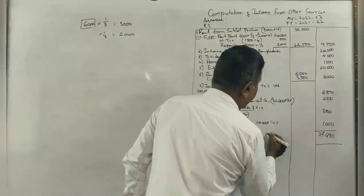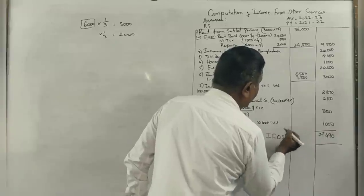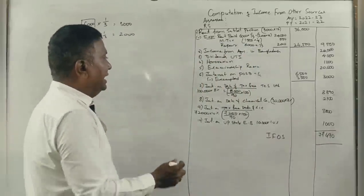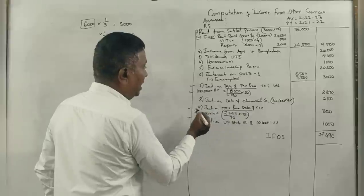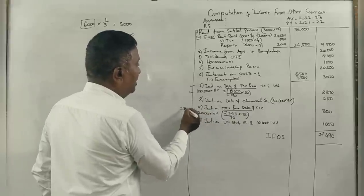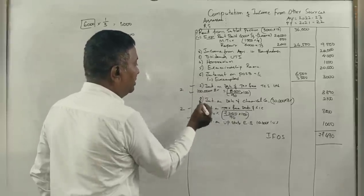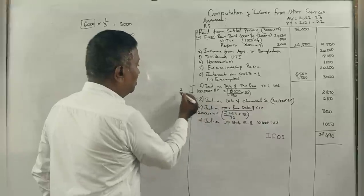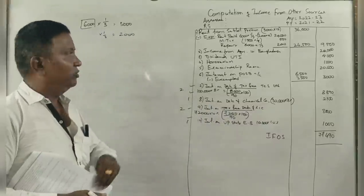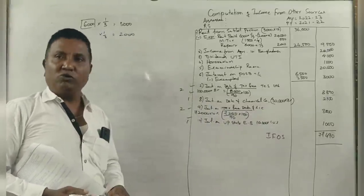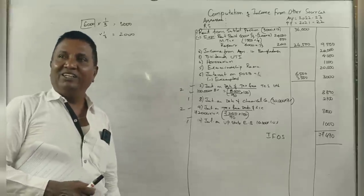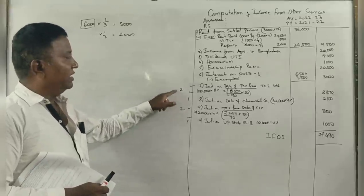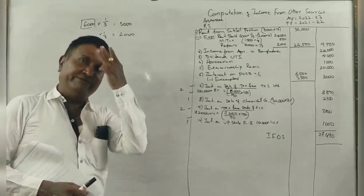This is called income from other sources. The marking scheme has point one worth 2 marks, point two worth 1 mark, totaling 6 marks. The overall answer is worth 15 marks with adjustments of 4 marks.